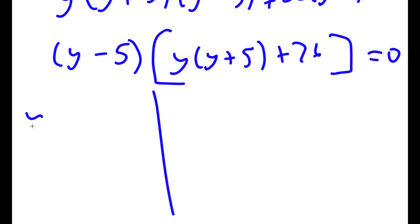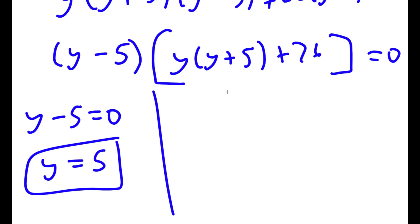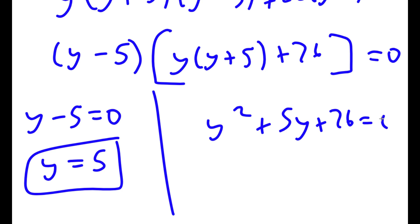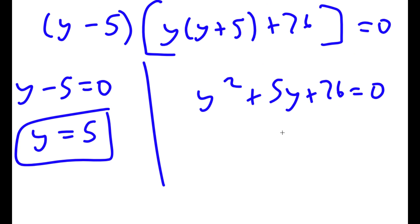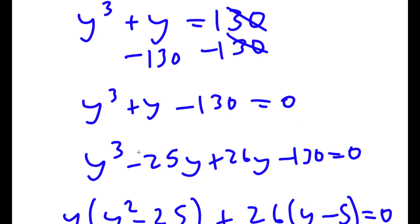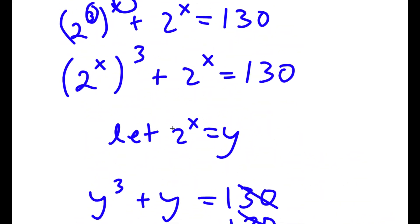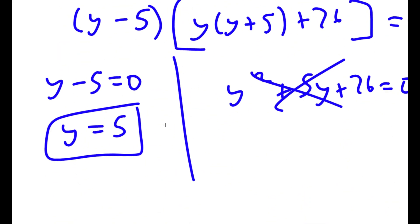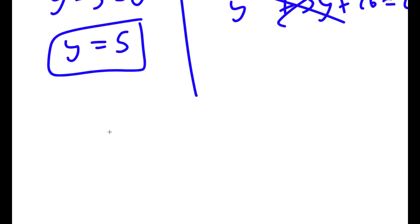Factoring out (y minus 5), I get (y minus 5) times (y(y plus 5) plus 26) equals 0. This gives two equations: y minus 5 equals 0, meaning y equals 5; and y squared plus 5y plus 26 equals 0. For the quadratic, using the quadratic formula gives the square root of a negative number, so it has no real solutions. We are left with y equals 5.